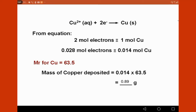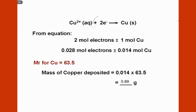Copper ions need two moles of electrons to be deposited as solid copper. This can also be written as two moles of electrons equals one mole of copper. In this reaction, 0.028 moles of electrons gives 0.014 moles of copper.